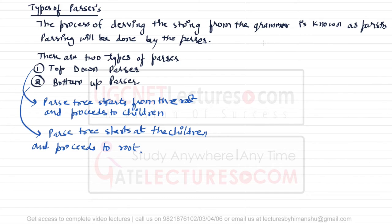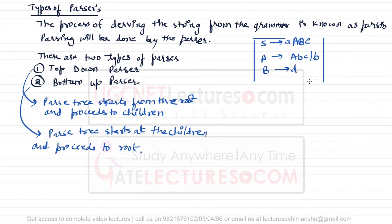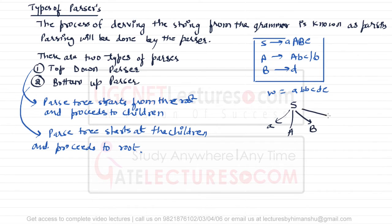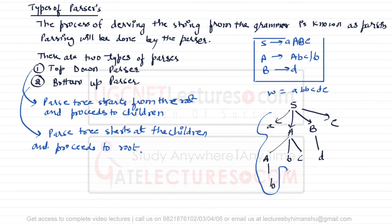Let me give you a simple example. Assume we have the following grammar: S can derive aABe, where A can derive abc, or bAbc, or small b, and B can derive d. For this grammar, we want to generate the string w = abbcde. From S we generate aABe, then A is replaced by b, and B is replaced by d, giving us the full string abbcde.